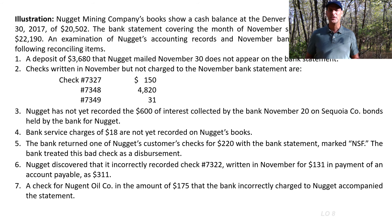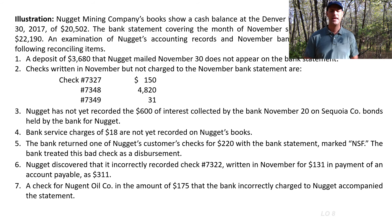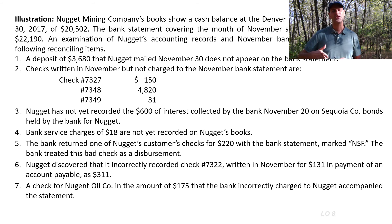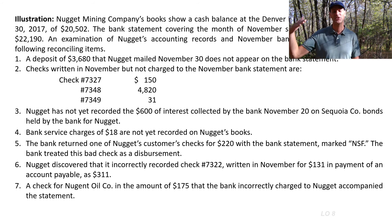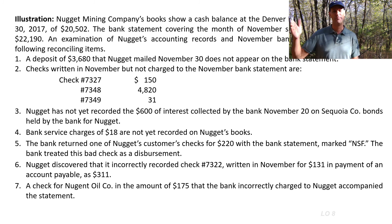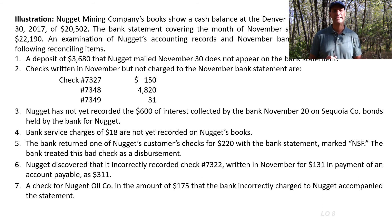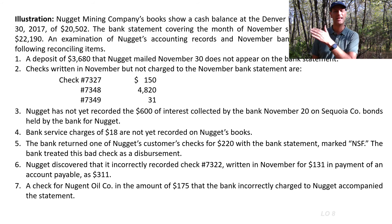Third, the company has not yet recorded $600 of interest collected by the bank on November 20th on bonds held by the bank. The company is invested in bonds held by the bank, which collected interest on them. The bank is correct; the company hadn't recorded it yet. So that is an adjustment to the book balance — $600 will increase the book cash balance. Fourth, bank service charges of $18 are not yet recorded on Nugent's books. That needs to be a reconciling item on the book side — the book balance comes down by $18.